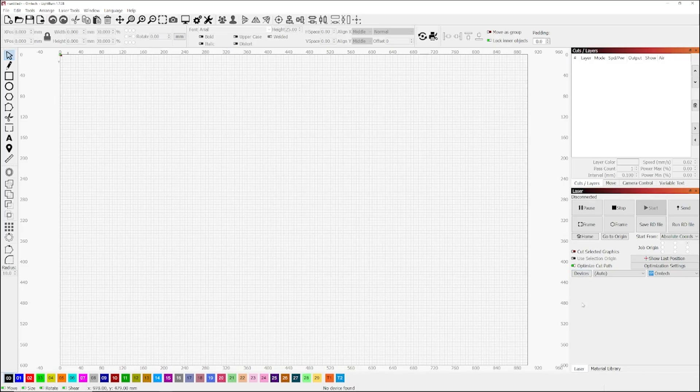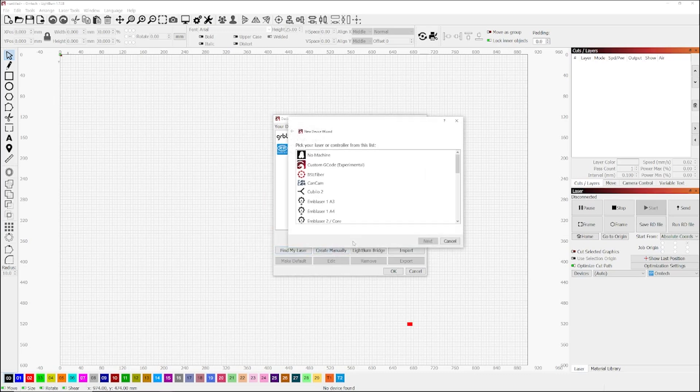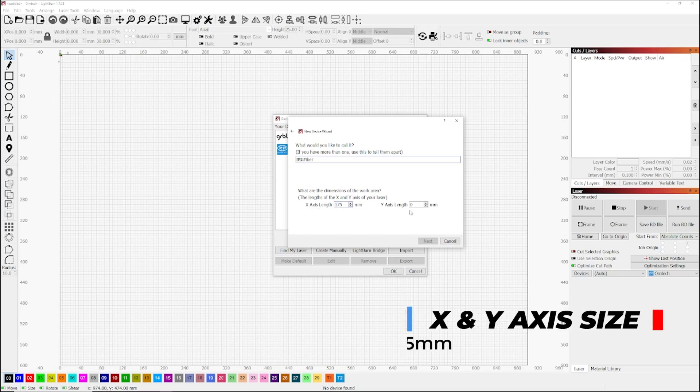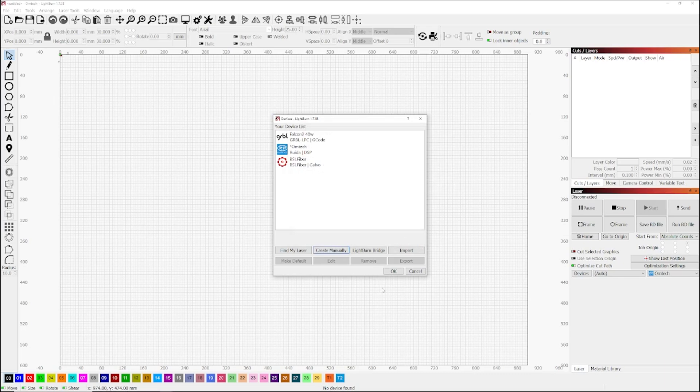Once I open up Lightburn, head over to devices there on the right hand side and we've got our little dialog box that comes up. The next step is to create manually, and you'll see the third one from the top there, BSL fiber. That's the driver I'll be using for the laser. Hit next, then you put in the X and Y lens there which is 175mm. Once those values are inserted you can then hit next. Then this dialog box tells us what settings we've put in there, and we can hit finish and then OK.